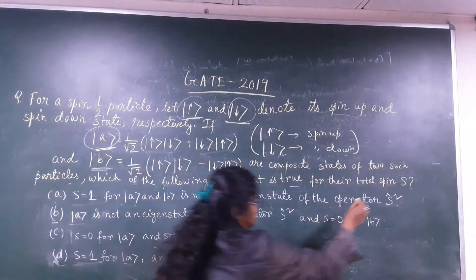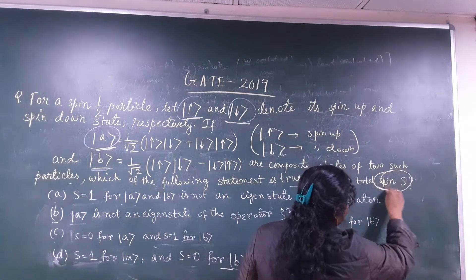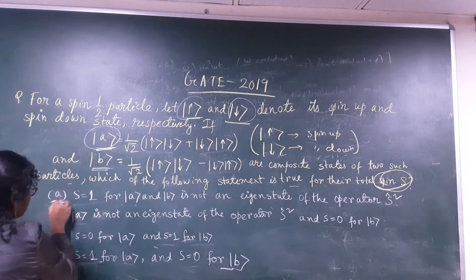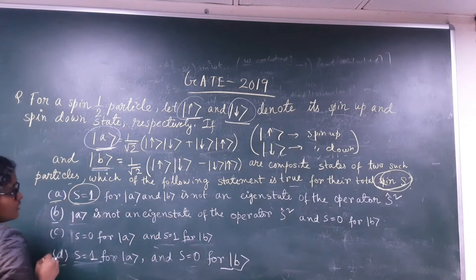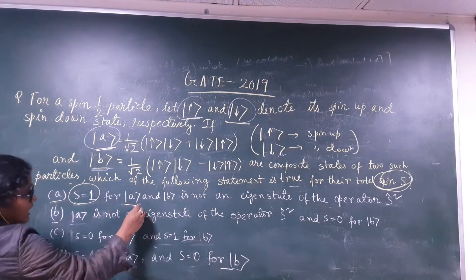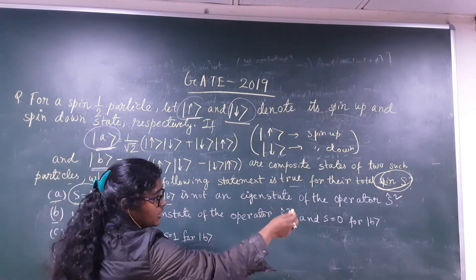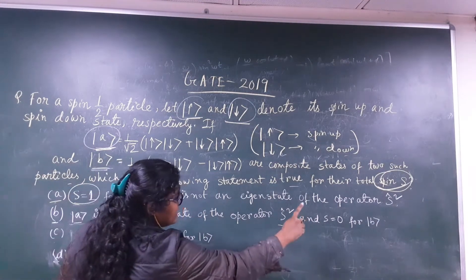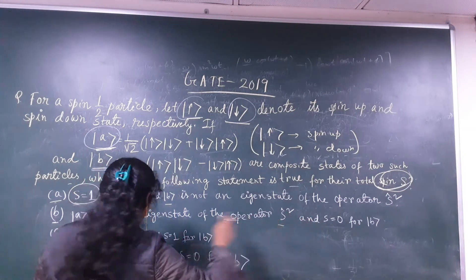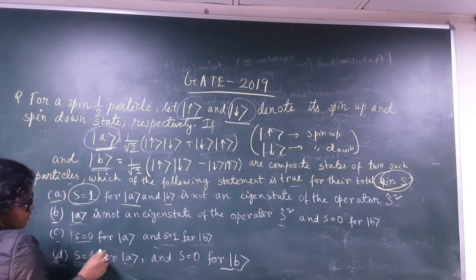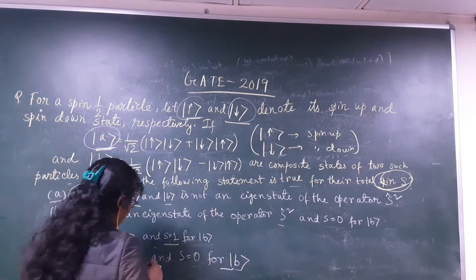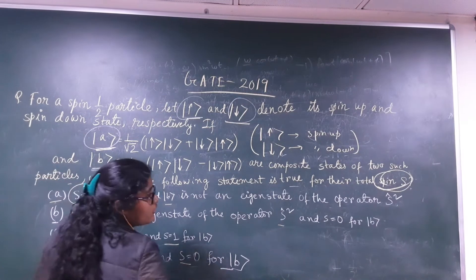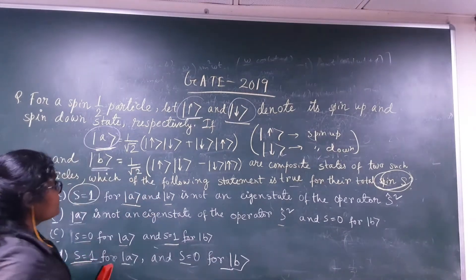We have to calculate the total spin S for states |A⟩ and |B⟩. The options are: option A — total spin S = 1 for both |A⟩ and |B⟩; option B — |B⟩ is not an eigenstate of the operator S²; option C — S = 0 for |B⟩ and S = 1 for |B⟩; and option D — S = 1 for |A⟩ and S = 0 for |B⟩.